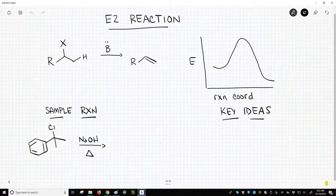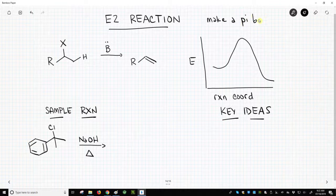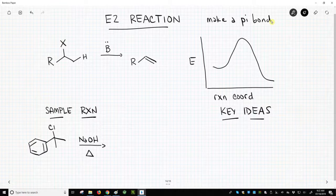It's one of our common reactions that we encounter on alkyl halides. So the E2 reaction is an elimination. So we are going to make a pi bond. Now when I say we're going to make a pi bond, almost always it's going to be a carbon-carbon pi bond.